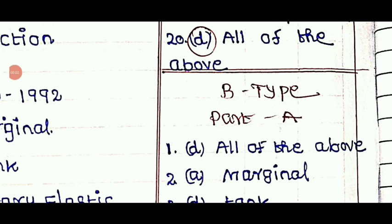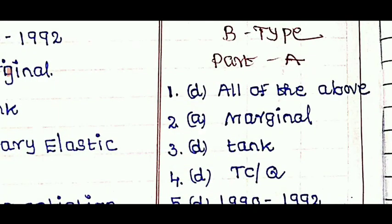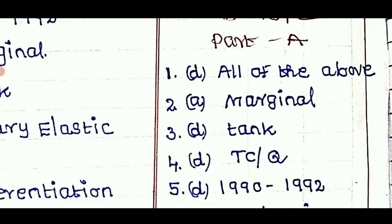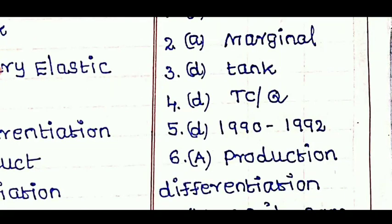So this is the A type. Now B type. Question number 1 option D, All of the above. Question number 2 option A, Marginal. Question number 3 option D, Tank. Question number 4 option D, TC by Q.